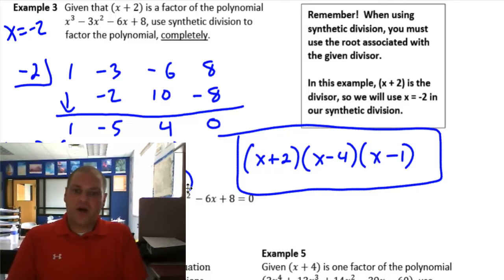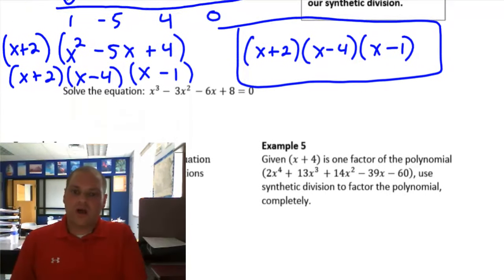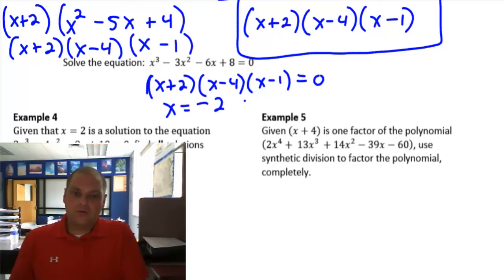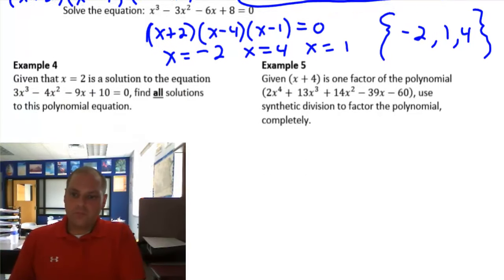You can still factor using methods we already learned. x minus 4, x minus 1. So my factors are x plus 2, x minus 4, x minus 1. That's factored completely. And then to solve the equation, it's the exact same polynomial equal to 0. We did that in lesson 11. Now I have the factors. Set them all equal to 0. So I get negative 2, positive 4 and positive 1. So my solution set would be negative 2, 1, and 4.